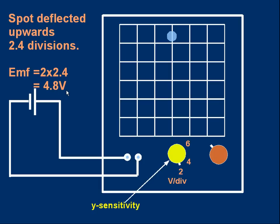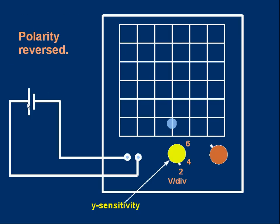It's a very good one. It has a very, very high input resistance. What do you think would happen if we connected the cell the other way around with the positive side on the left and the negative on the right? Pause and have a think. The answer is the spot would have moved from the middle to the bottom by the same amount as the previous screen, 2.4 divisions down. So that's a negative voltage.